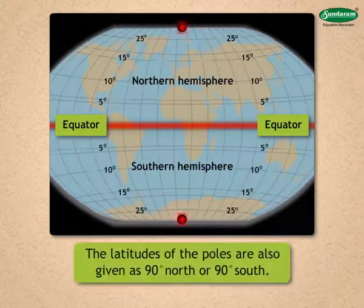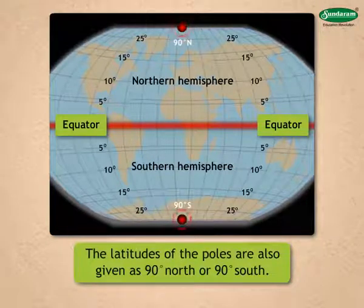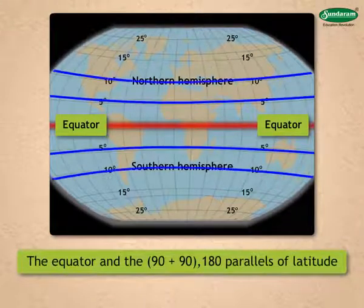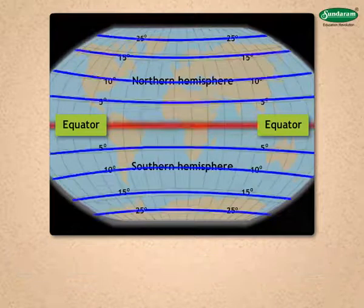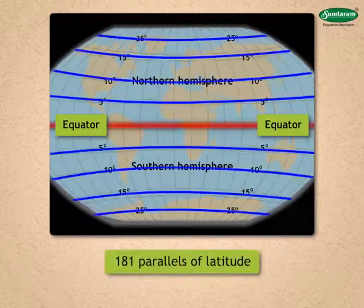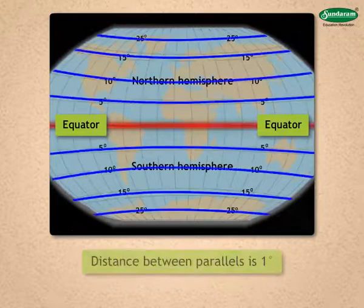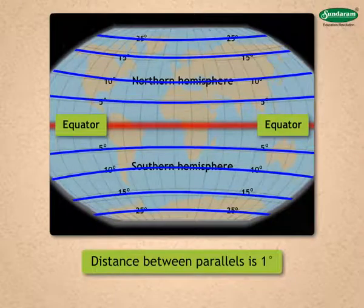The latitudes of the poles are also given as 90 degrees north or 90 degrees south. The equator and the 180 parallels of latitude above and below it on the earth's surface make a total of 181 parallels of latitude. Each parallel is at a distance of one degree from the next.